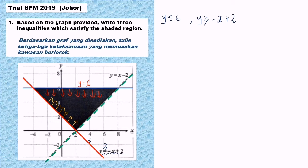Next, the equation is y equals x minus 2, and we check the shaded region. The shaded region is also above the straight line, so if above the straight line it means greater. But here we cannot write 'or equal to' because the line is a dotted line. So the last inequality is y greater than x minus 2.